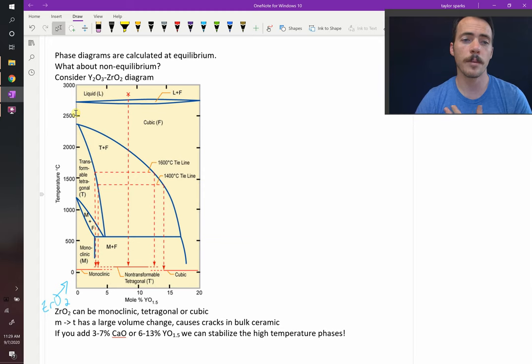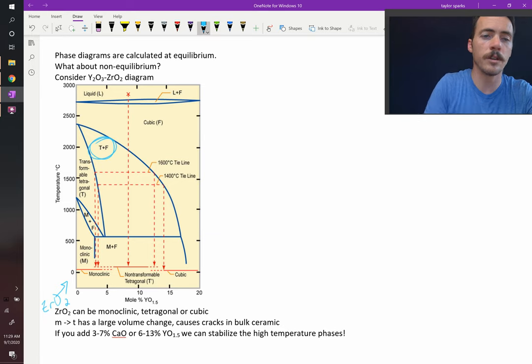Now, something happens. You can introduce yttria. And as you introduce yttria, let's say that you end up in this region right here, the T plus F region.